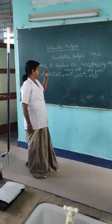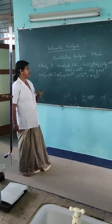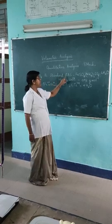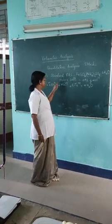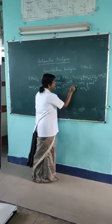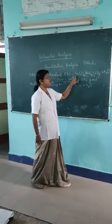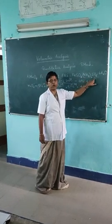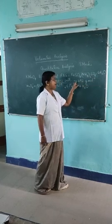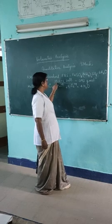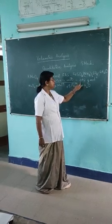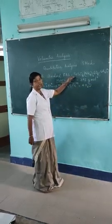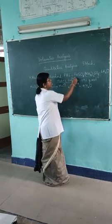Let us discuss this titration in detail — potassium permanganate versus standard ferrous ammonium sulfate. Ferrous ammonium sulfate is also called Mohr's salt. The formula of ferrous ammonium sulfate is FeSO4·(NH4)2SO4·6H2O, and the molar mass of Mohr's salt, ferrous ammonium sulfate, is 392 grams per mol.